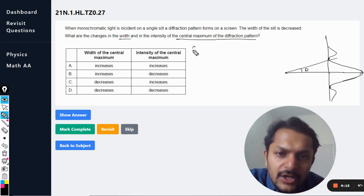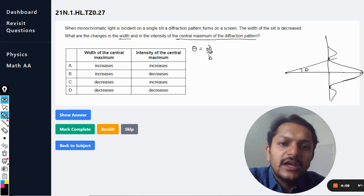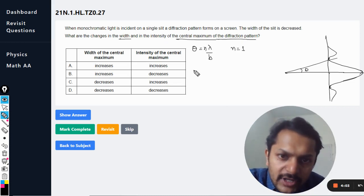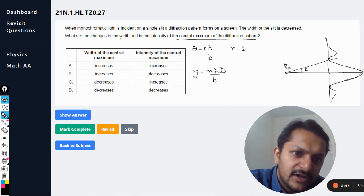This angle is theta, so theta is taken as lambda divided by b. And there is n of course in the numerator, but that n becomes equal to one.